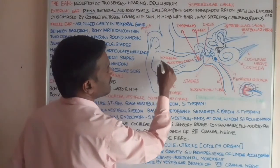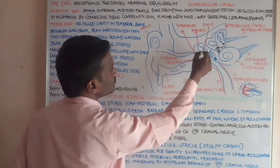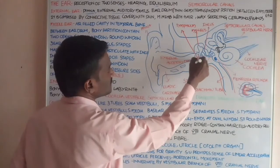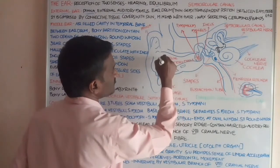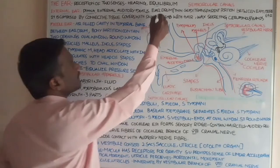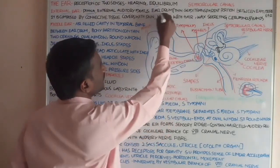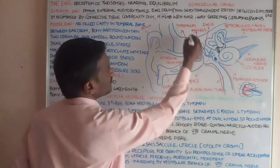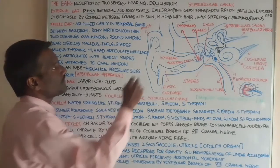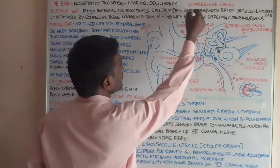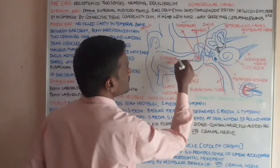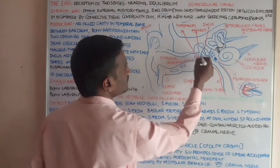The external auditory meatus passes sound waves into the part of the eardrum or tympanum. It is a straight and curved tube-like arrangement. The eardrum is also called the tympanum, and it was first formed in the amphibians.